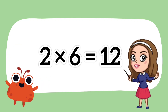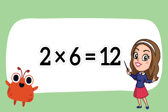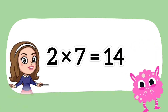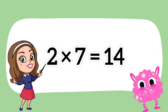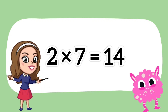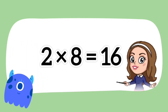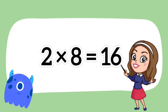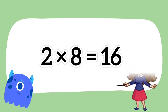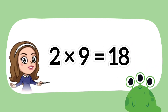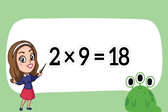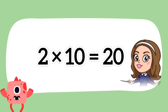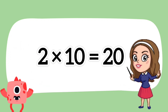Two sixes are twelve. Two sevens are fourteen. Two eights are sixteen. Two nines are eighteen. Two tens are twenty.